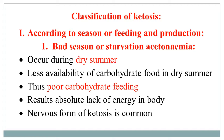One classification is according to the season or feeding and production. The first type is bad season or starvation acetonemia. This type of ketosis occurs during summer, especially dry summer. During dry summer, there is less availability of carbohydrate food, and thus poor carbohydrate feeding to the dairy cattle. Carbohydrate is not available to the animal because the food is not available, and this results in absolute lack of energy in the body. This type of starvation acetonemia manifests the nervous form of ketosis in cows.